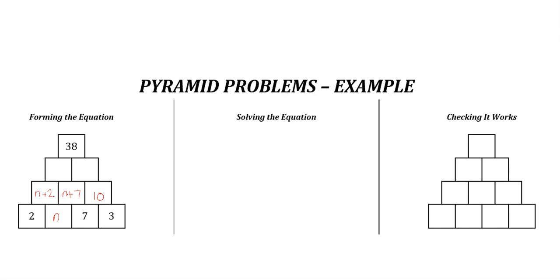carry on: n plus 2 plus n plus 7 is 2n plus 9 (n plus n is 2n, 2 plus 7 is 9). n plus 7 plus 10 is n plus 17. Now in the top here we've already got